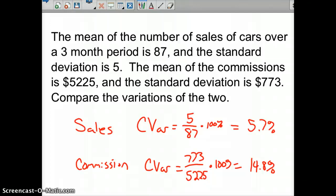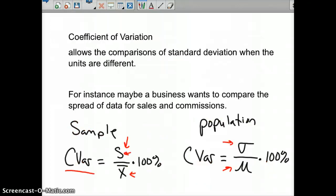But we know we can compare them now with that percentage. And we know that commission, with a 14.8% spread means we got a higher spread than the sales. And so, there you have it. That's coefficient of variation. So good luck, hope this helps, and see you next time. Bye.